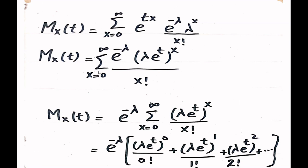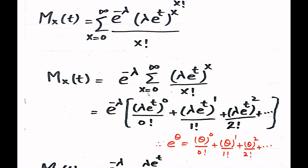We take e^(-λ) outside the summation sign because it has no involvement of the random variable x. So the MGF becomes e^(-λ) times the sum from x = 0 to infinity of (λe^t)^x / x!. Expanding this summation: for x = 0, we get (λe^t)^0 / 0!; for x = 1, (λe^t)^1 / 1!; for x = 2, (λe^t)^2 / 2!; and so on.